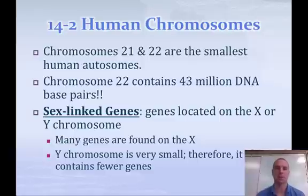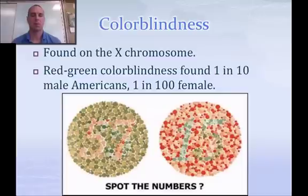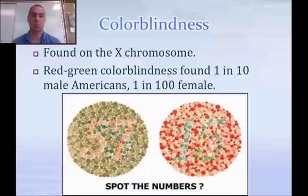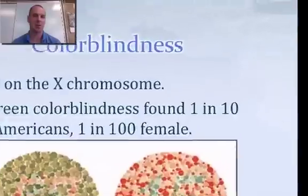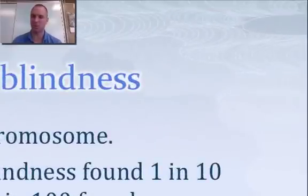A sex-linked trait can technically be found on either the Y or the X chromosome, even though we mostly discuss X-linked ones. Colorblindness is a sex-linked trait found on the X chromosome. It affects about one in every ten American males but only about one in every hundred females. Here on screen is a colorblindness test — you should see the number 34 and 44 in the two circles; it tests for red-green colorblindness.